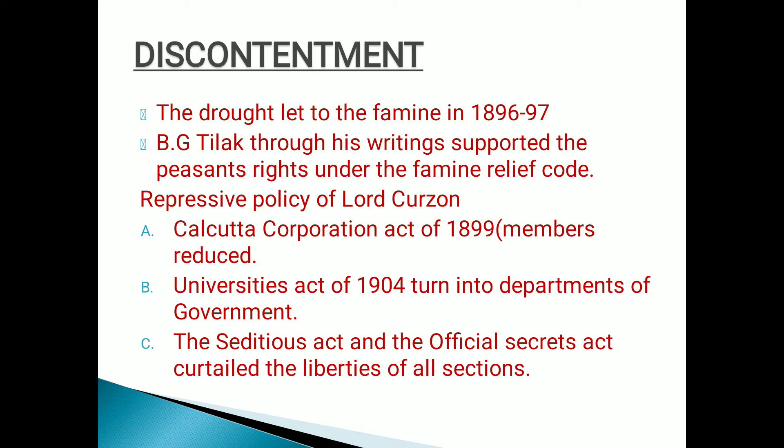The very first thing: he passed the Kolkata Corporation Act of 1899, where members were reduced to half. Next, he passed the Universities Act of 1904, which turned universities into departments of government — he started dominating the Indian universities. Next, the Seditious Act and Official Secrets Act curtailed the liberties of all sections.